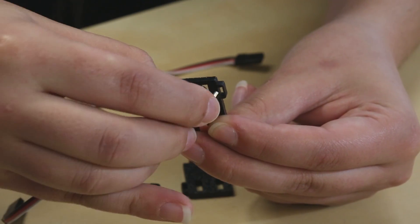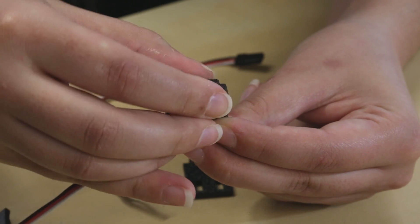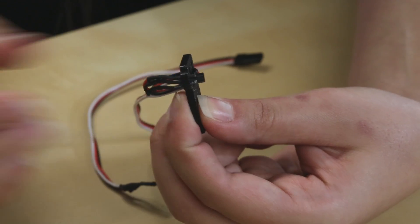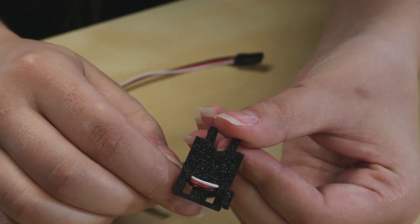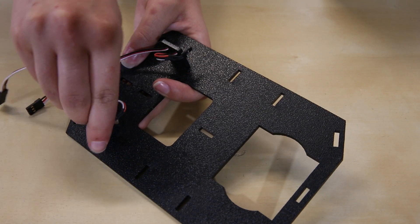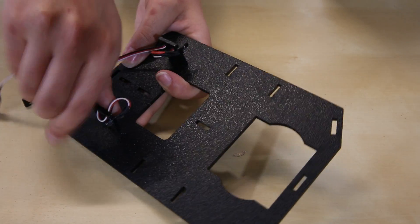You're just going to loop that through a couple of times and push it through the end, and you're going to do this for both sides. Now that we have weaved our Halifex sensors through their holding, we can just snap those into the base plate.